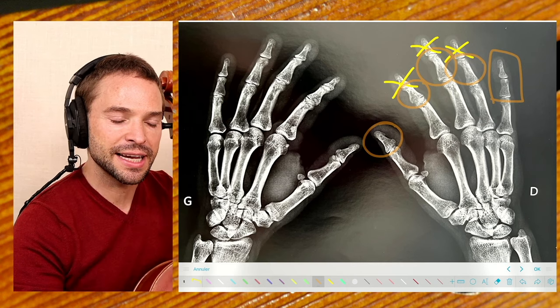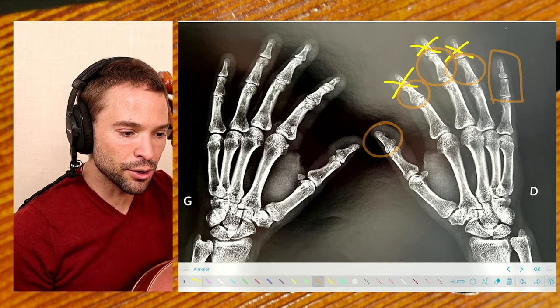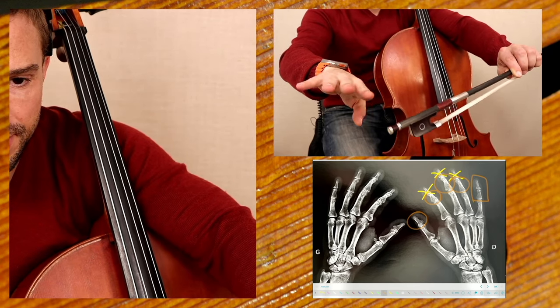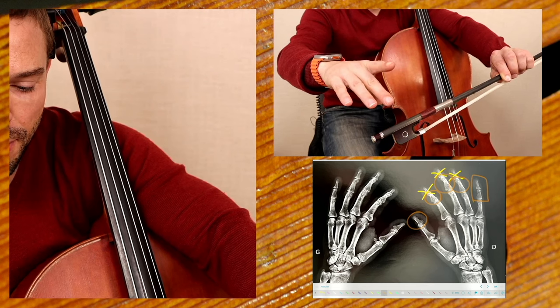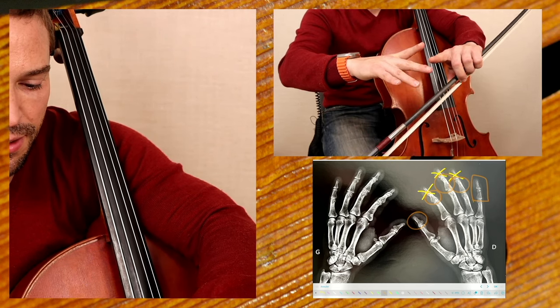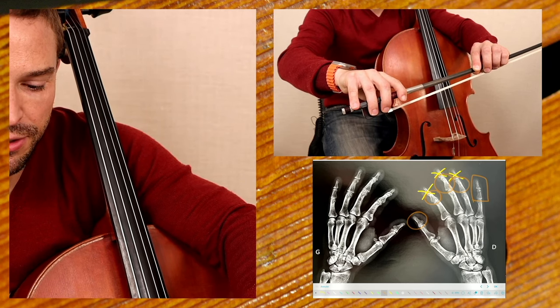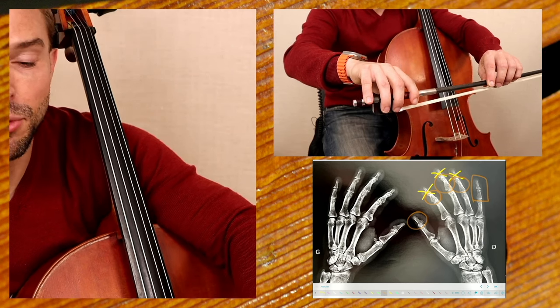So when you start to understand that the bow hold is not going to be with the tips of your fingers, but with this second bone in there, you're really going to start to understand and be more comfortable with it.